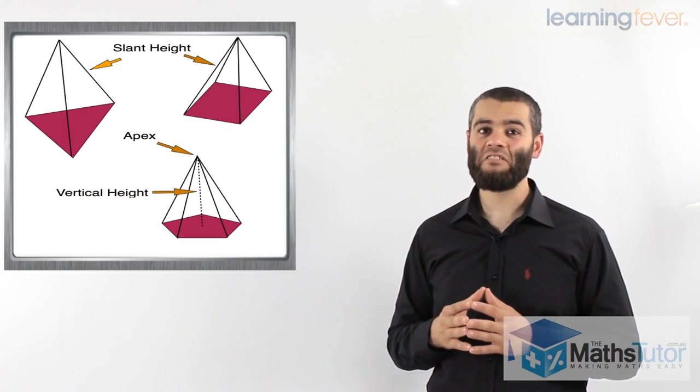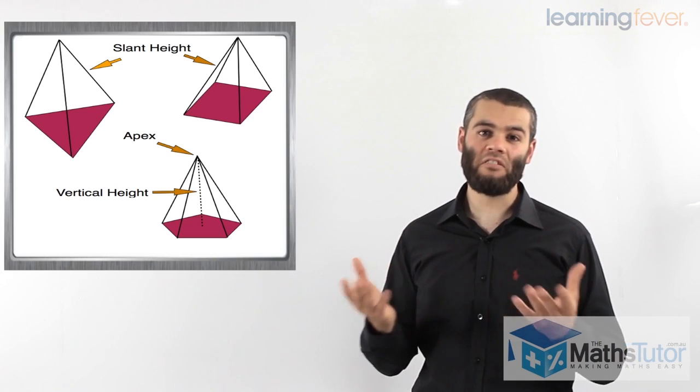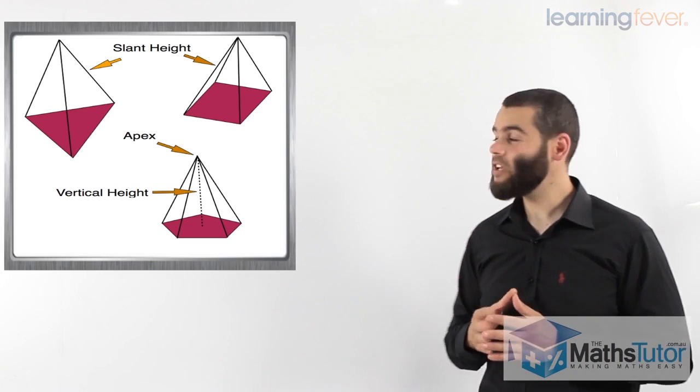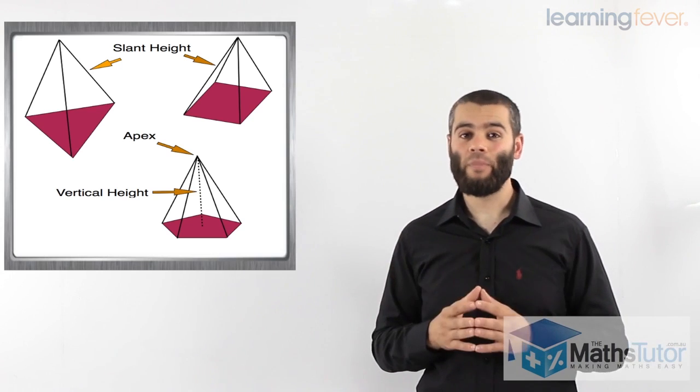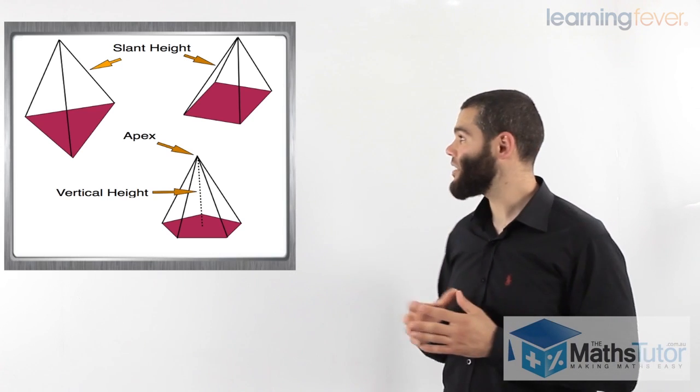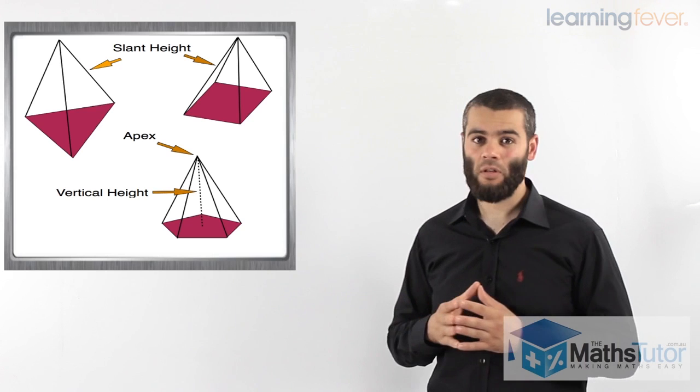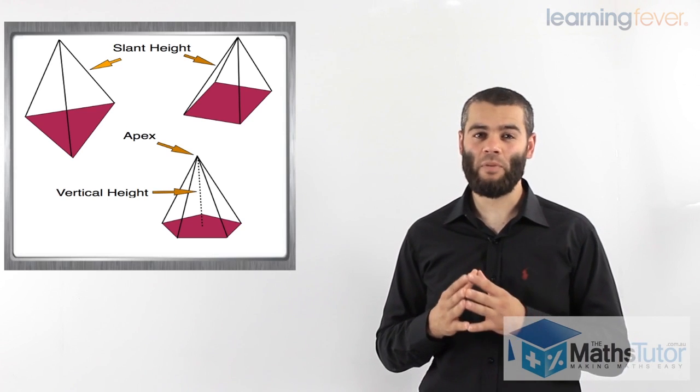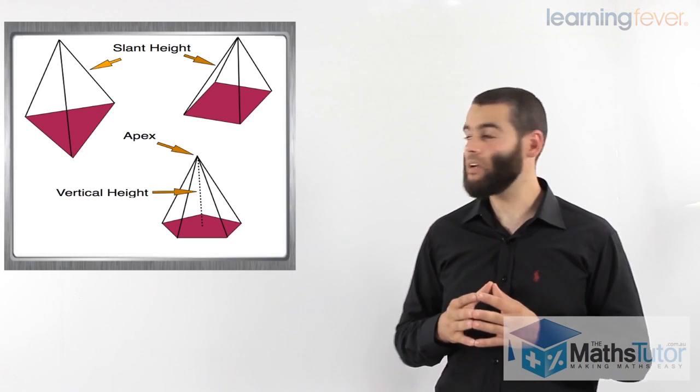So, if the pyramid has a square base, then it is called a square pyramid. If it has a triangular base, it is going to be called a triangular pyramid. If it has a pentagonal base, a pentagon as a base of the pyramid, it is going to be a pentagonal pyramid.